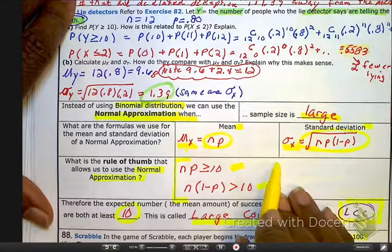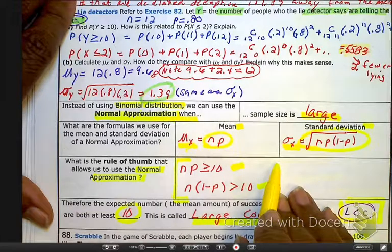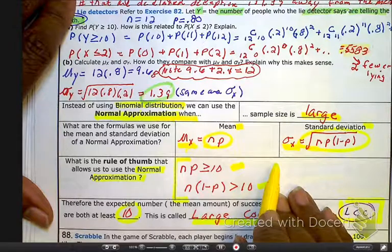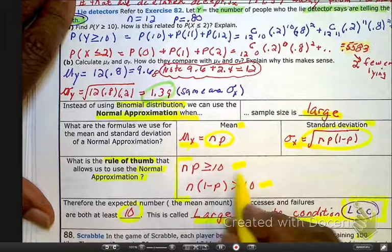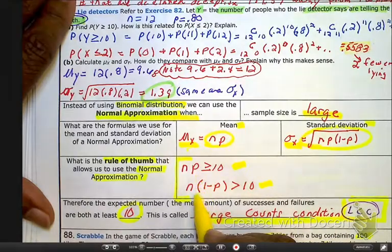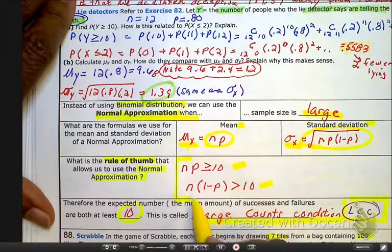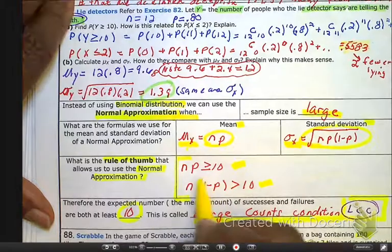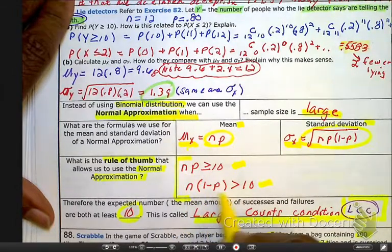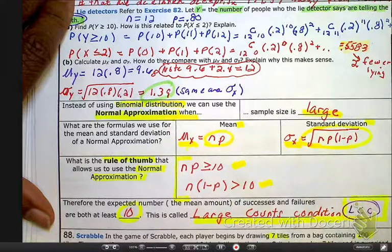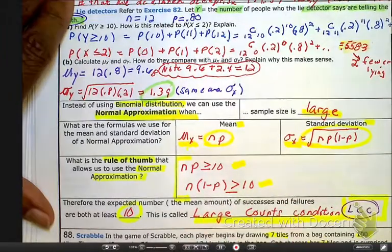But here's the problem. What if they do not tell us that it's approximately normal? Well, that means we have to look at our rule of thumb. Looks like LCC to me. LCC, you know me. Okay, that was terrible. Okay, so here, our n times p, n times p-naught has to be greater than or equal to 10. And if that meets the criteria, then we can say that something is approximately normal.